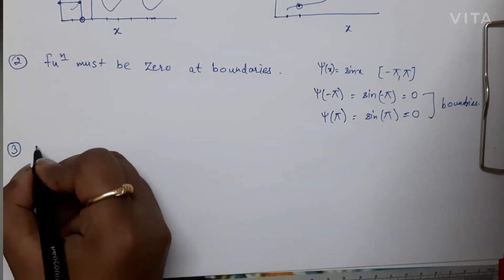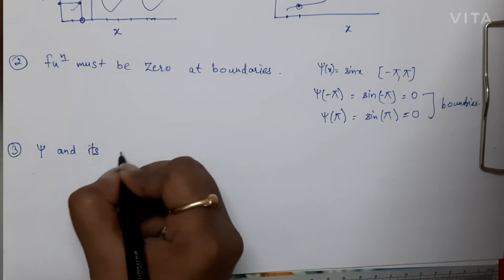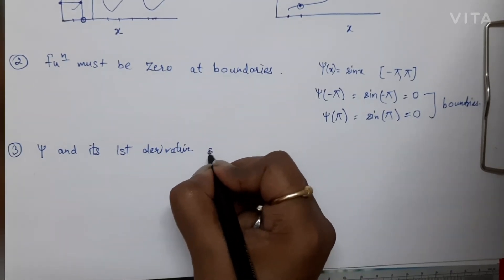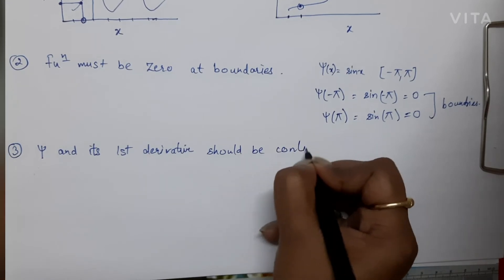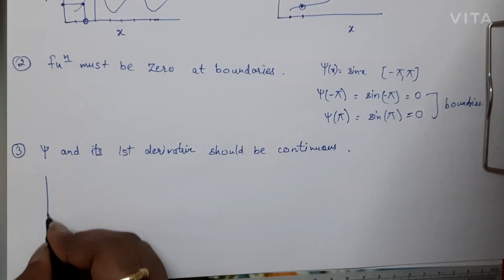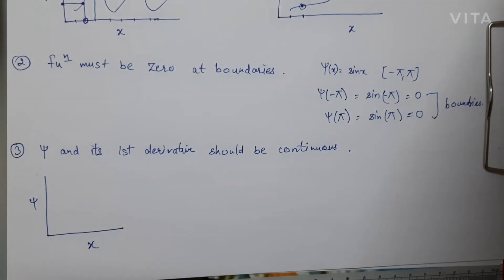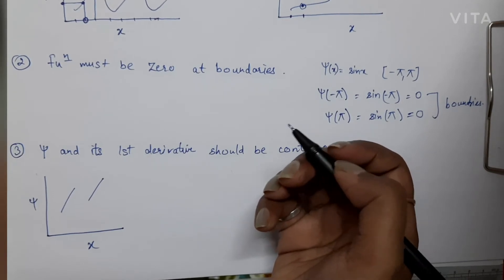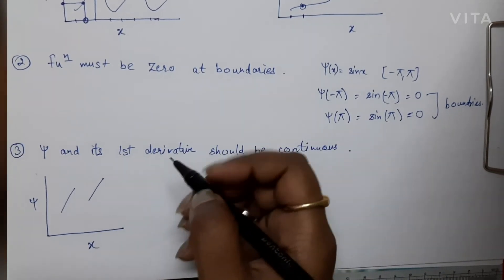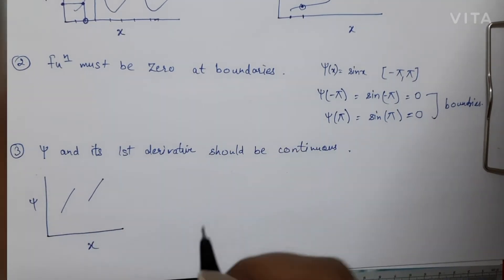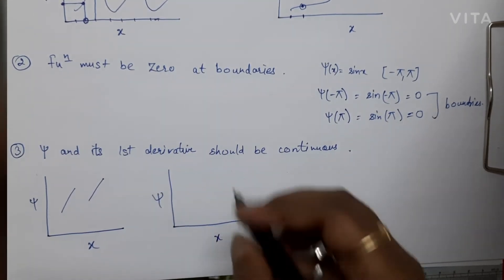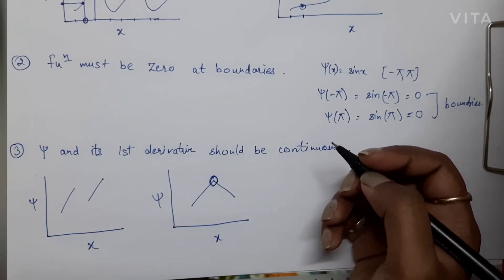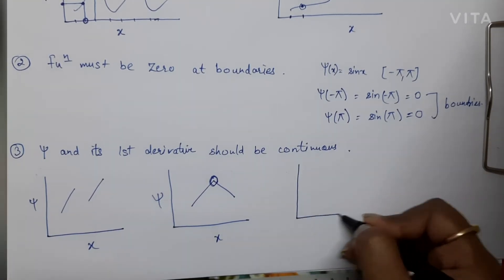The third condition is that the wave function psi and its first derivative should be continuous. If a plot of psi versus x shows some kind of breakage in the wave function, it is not a continuous function and will not be acceptable. Also, if psi has a sharp change, then when we take its derivative it becomes discontinuous. Sharp changes in the curves are not accepted.